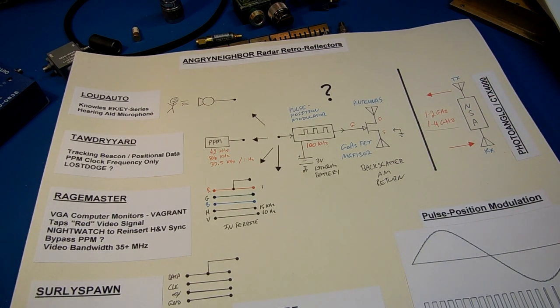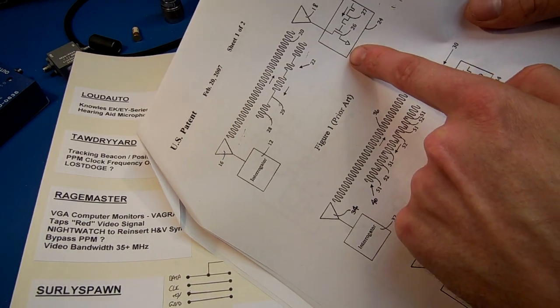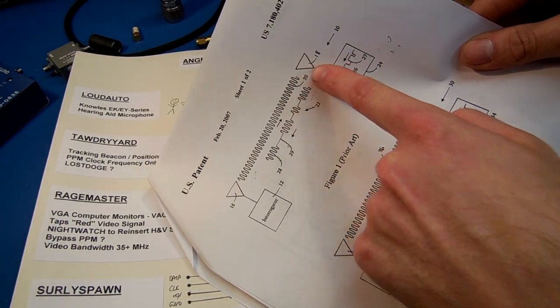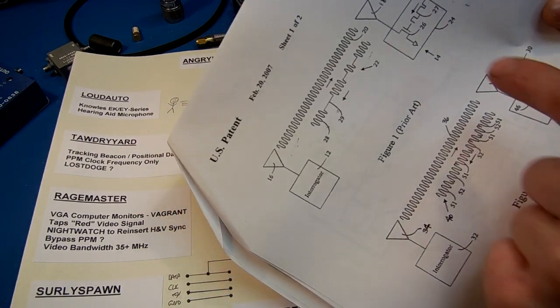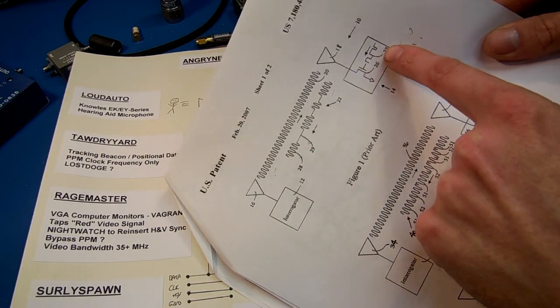I believe the source may be tied directly to ground, like in this patent they're just tying the source to ground. And the drain just goes to an antenna. There's no need to bias the FET at all because your gate is essentially biasing it.